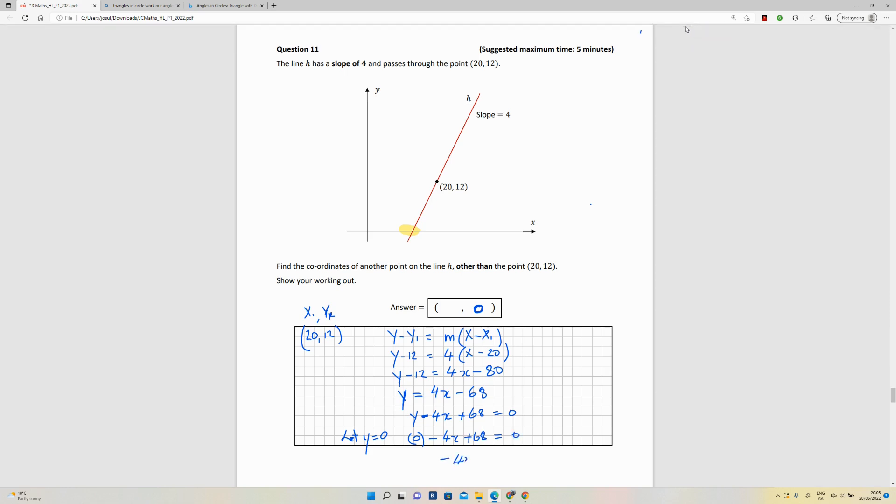So minus 4x minus 68, and 4x is equal to... x is equal to 17. Okay, so x is equal to 17. So the answer here is x is 17 and y is zero. So there's your point.